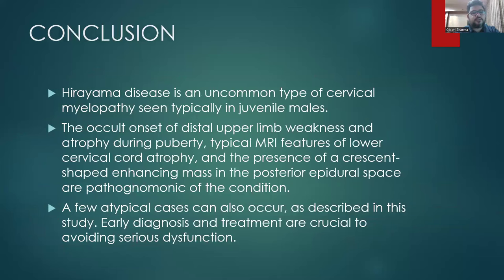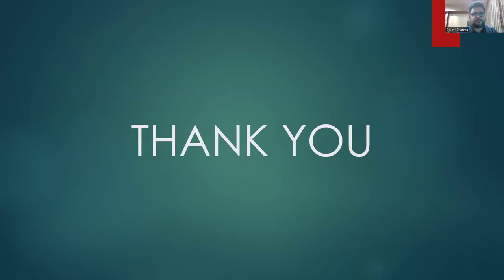In conclusion, Hirayama disease is an uncommon type of cervical myelopathy seen typically in juvenile males. The occult onset of distal upper limb weakness and atrophy during puberty, typical MRI features of lower cervical cord atrophy, and the presence of a crescent-shaped enhancing mass in the posterior epidural space are pathognomonic of the condition. A few atypical cases can also occur as described in this study. Early diagnosis and treatment are crucial to avoiding serious dysfunction. Thank you.